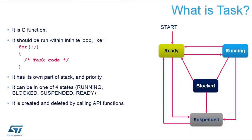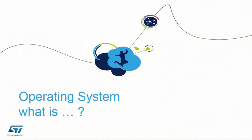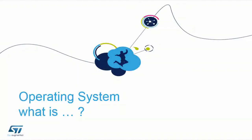A question: what is an operating system? What do you expect from an operating system? Simultaneous running of tasks, implementing different modules, hardware resource management, interrupt handling, and scheduling of tasks — all of this the operating system should handle.